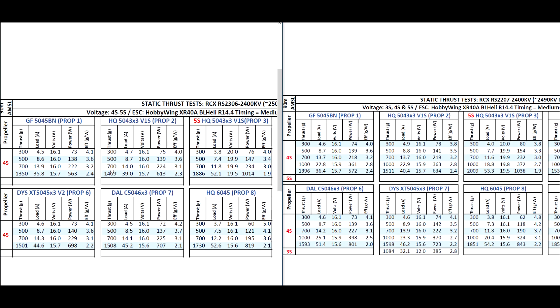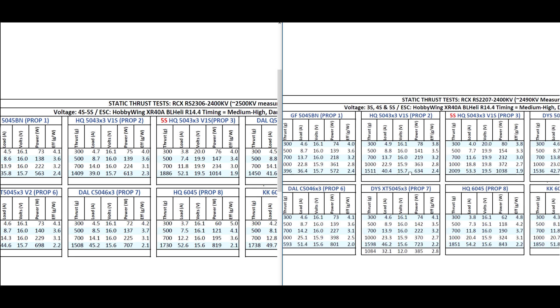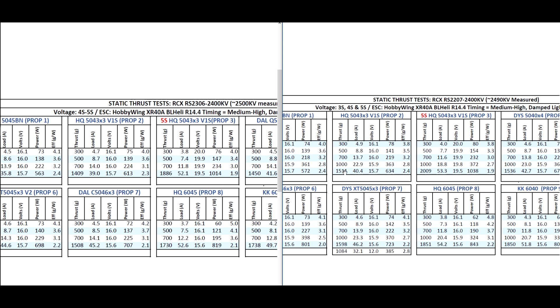Pretty interesting to see how these two motors perform. Pretty similar, actually, on 5-inch right here with the 5045 BN. It's pretty much identical. Pretty much the same amps and thrust. As we move up on the prop size, we can see the 2207 edging out the 2306. As you can see here on the HQ 5043x3. Slightly higher thrust for pretty much the same amps. Just a little bit higher.